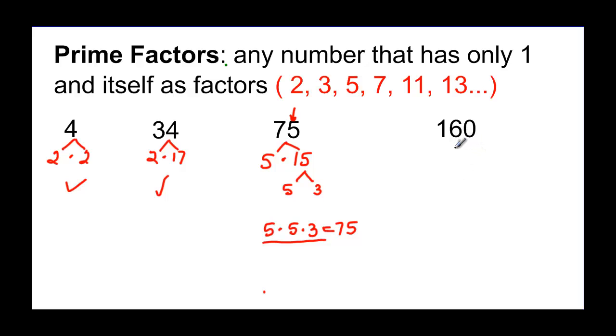One more. So 160. Well, it's divisible by 2, it's divisible by 5. I used to start with the smallest number, I don't know why. I might go faster if I did a bigger number, but I always use the smallest number for some reason.